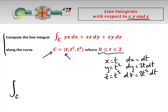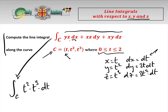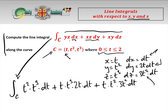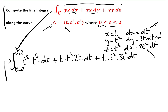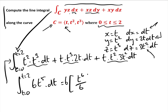The integral over our curve becomes: substituting in, y is t², z is t³, so we get t² · t³ dx; then x is t, z is t³, dy is 2t dt, giving t · t³ · 2t dt; then x is t, y is t², dz is 3t² dt. With t going from 0 to 2, this becomes the integral from 0 to 2 of t⁵ + 2t⁵ + 3t⁵ = 6t⁵ dt, which equals [t⁶]₀² = 2⁶ = 64.